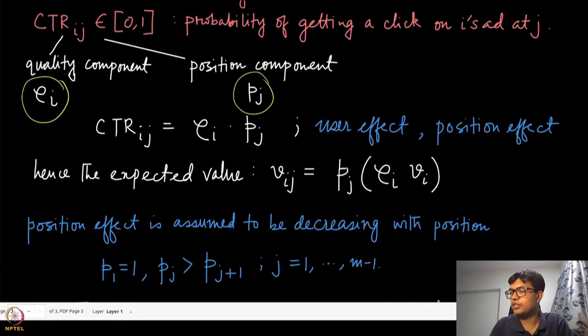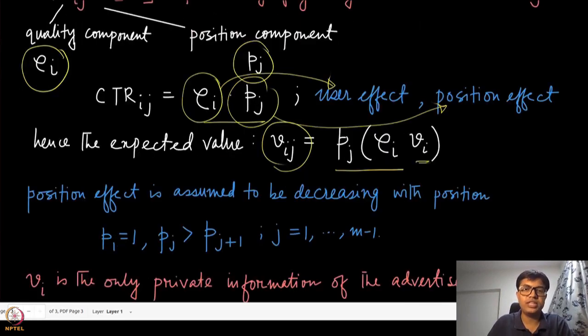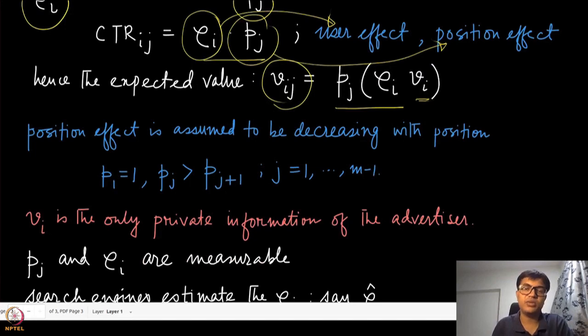The CTR_IJ can be decomposed into two components: the quality component and the position component. This is the user effect or advertiser effect, and the second is the position effect. The expected value VIJ equals PJ times ρI times VI. Within the parenthesis, we have isolated the advertiser-dependent part, and outside is PJ, which is position-dependent.